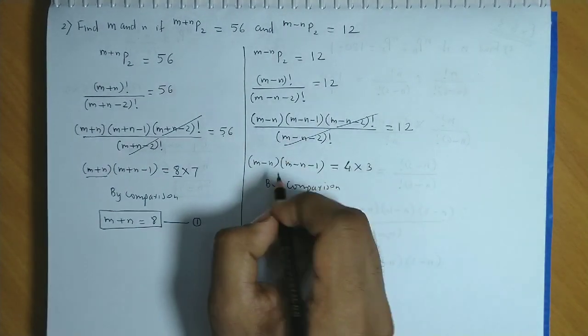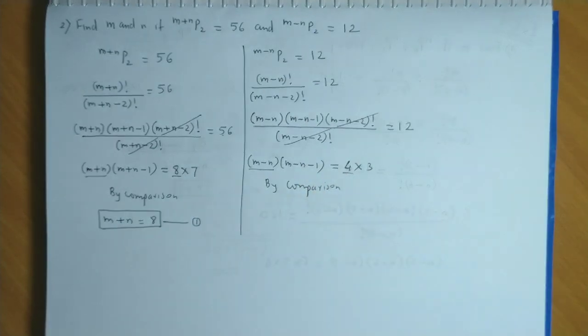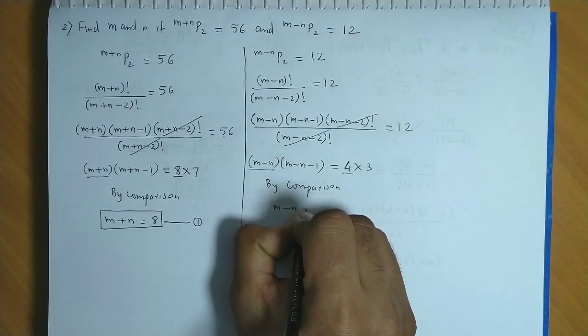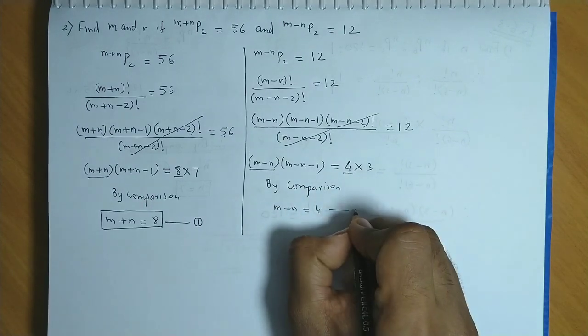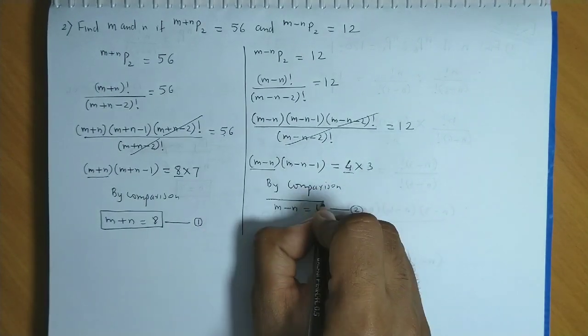by comparison, let us equate the first factors. That is, m minus n equal to 4. So from here we get the second equation, m minus n is equal to 4.